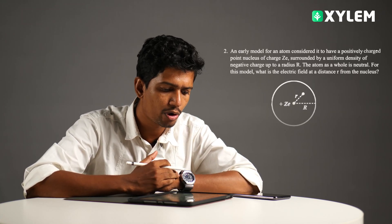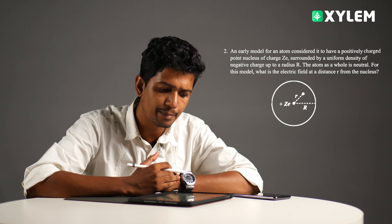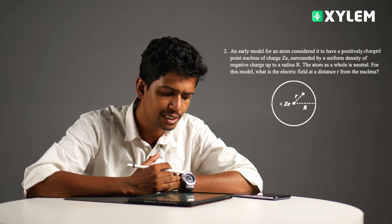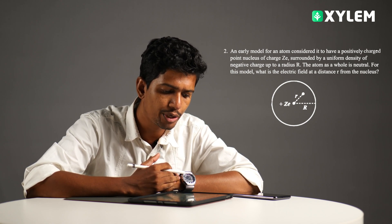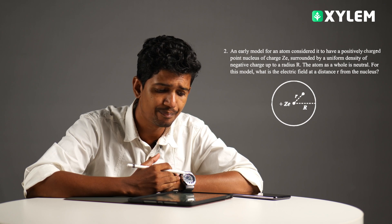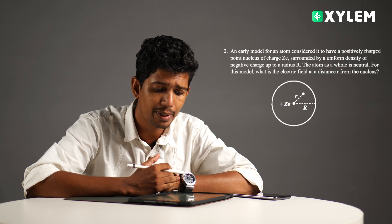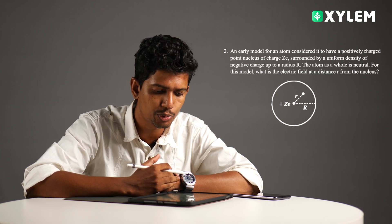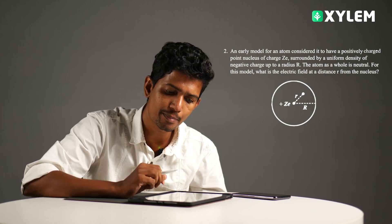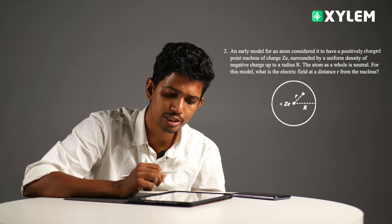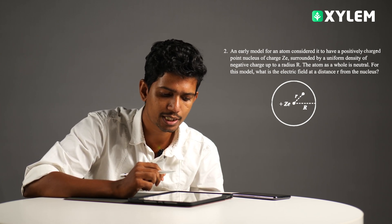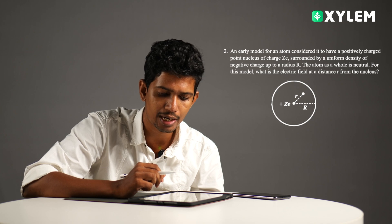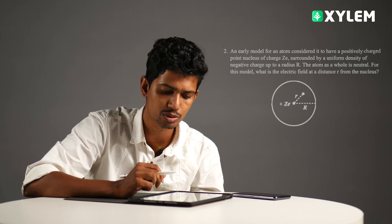Hi, Prashad from Sila. NCIT example 1.13. An early model for an atom — consider it to have a positively charged point nucleus of charge ZD surrounded by a uniform density of negative charge up to the radius R. The atom as a whole is neutral. For this model, what is the electric field at a distance R from the nucleus?